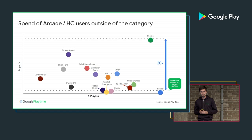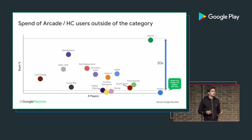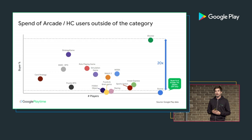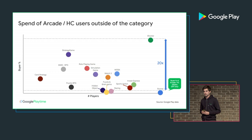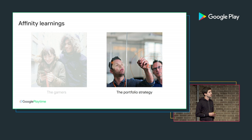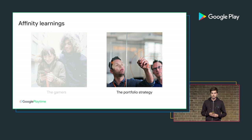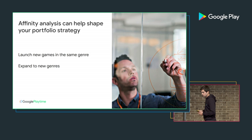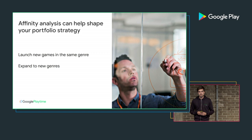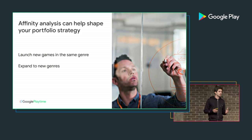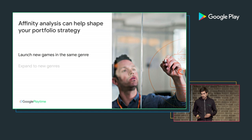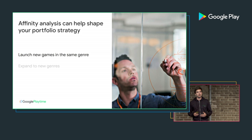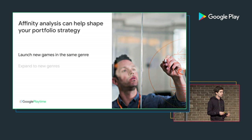It was very interesting to see how these gamers are not only very open to playing other categories, but also very open to changing their engagement and spend behavior when going from one genre to another. But that's only part of the story, because there are many more insights we can use for portfolio strategy. We divided those insights into two categories: launching new games in the same genre, or expanding to new genres. I'll cover the first part, then invite Guy from Plarium on stage to talk about successfully going from one genre to another.